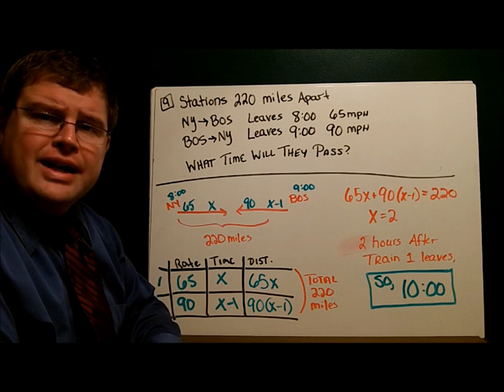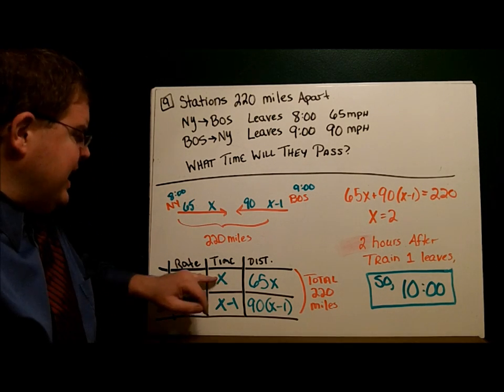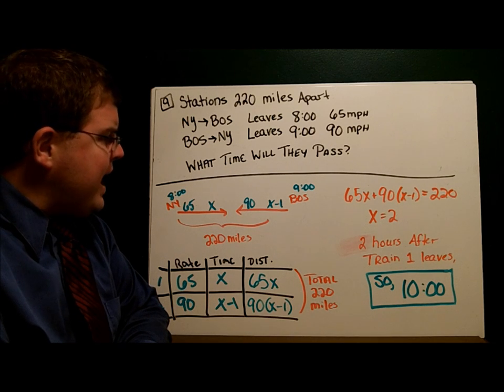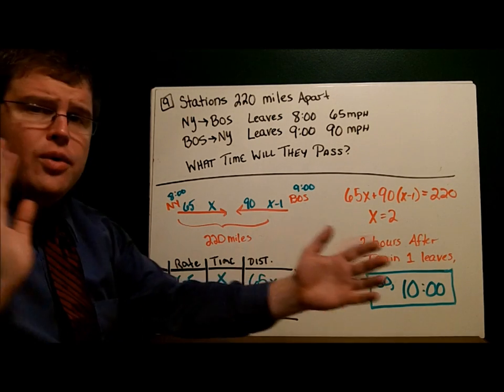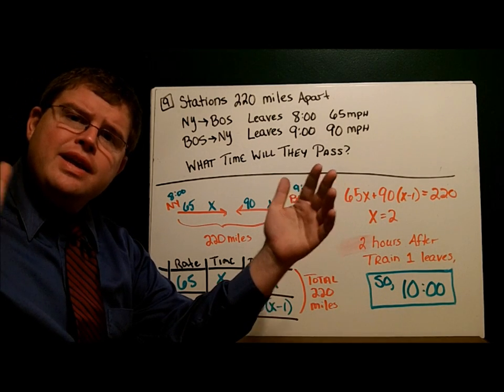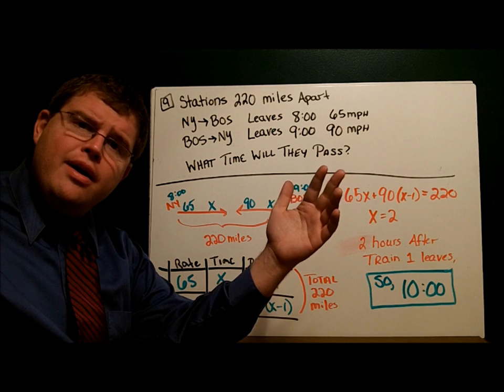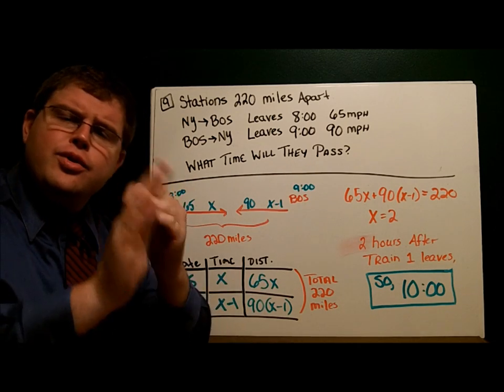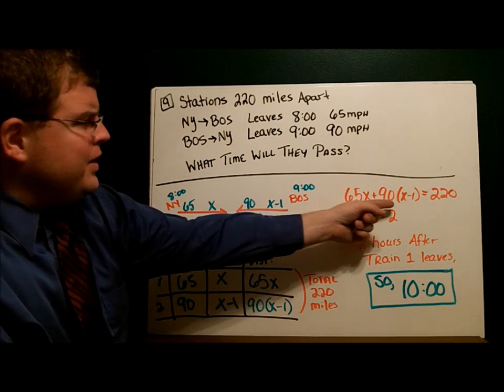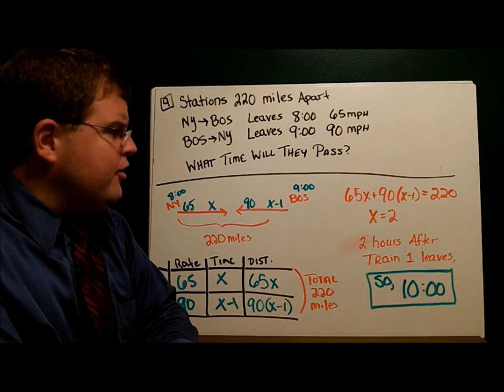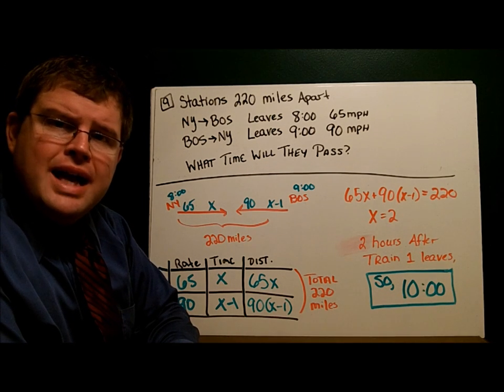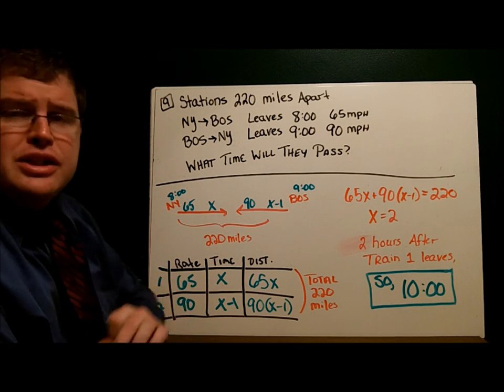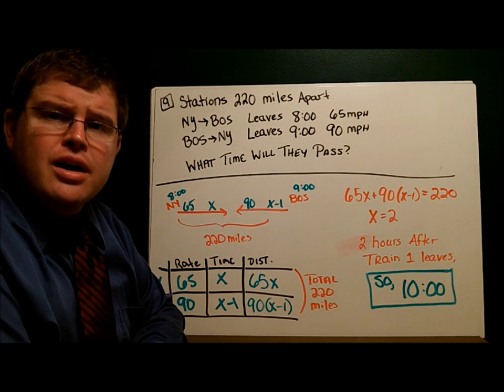Fill in my table. I have my rates, my amounts of time. Rate times time gives me distance. When will they pass? When they've gone a total of 220 miles, because the train stations are 220 miles apart. When they pass, they've gone that total of 220 miles. I have the distance for the first, the distance for the second equals 220: 65X + 90(X-1) = 220, and X equals 2. If this train left at 8 o'clock and it takes 2 hours, it must be 10 o'clock when the trains pass.